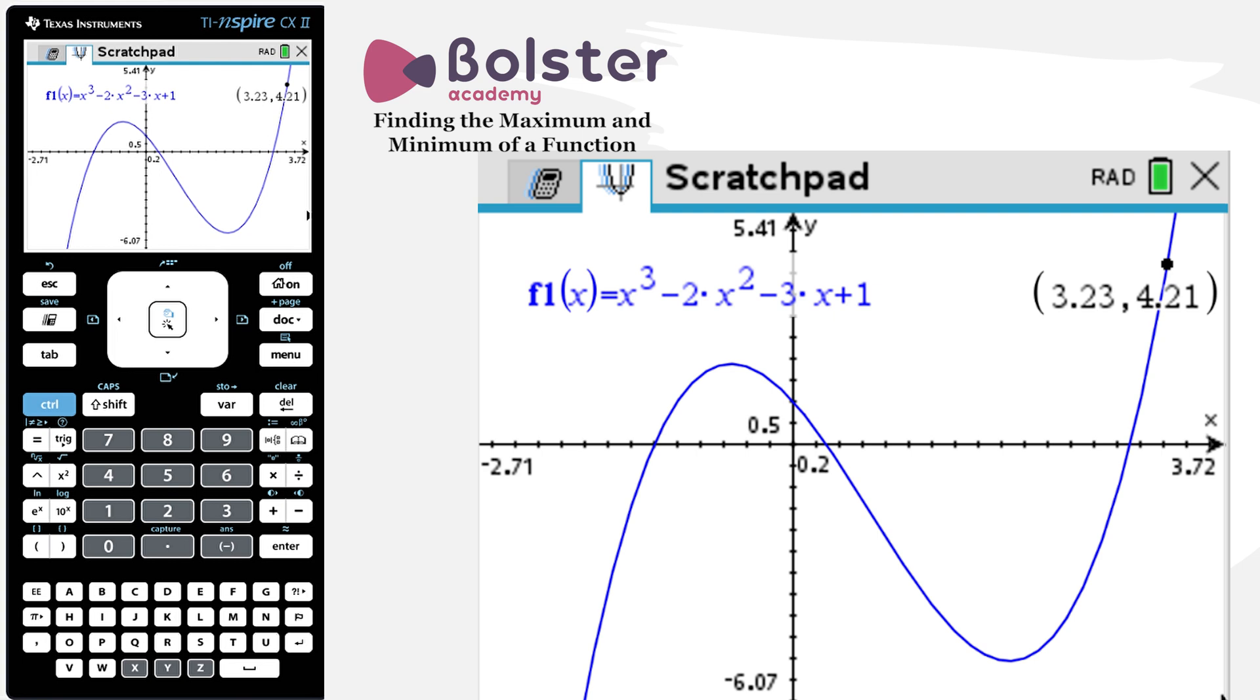So x equals 3.23 is not actually a local max. It's not a turning point of the graph. It's just the largest value that the graph takes on between the two bounds that I chose. So if I want to find my local maximum point, I just need to be a little bit more careful when I choose my bounds.